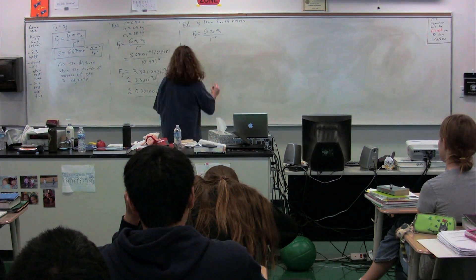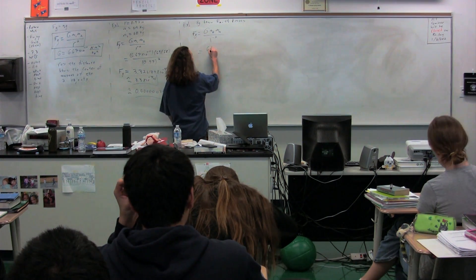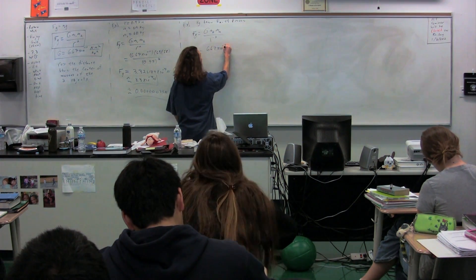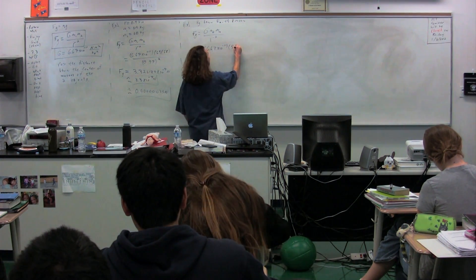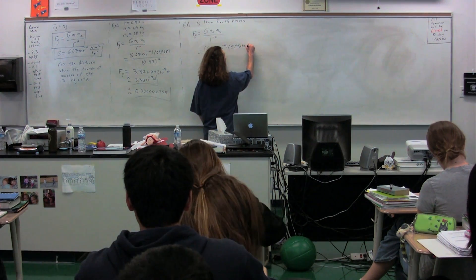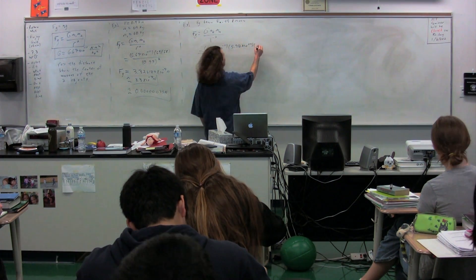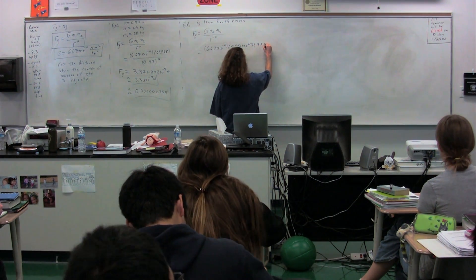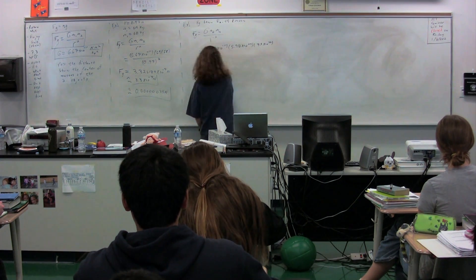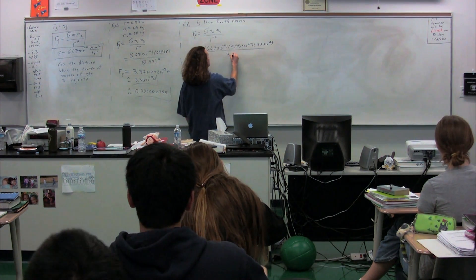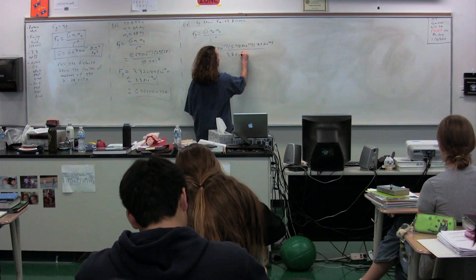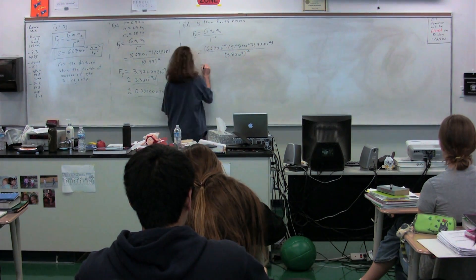Okay. We need all these numbers. Big G, 6.67 times 10 to the negative 11. The mass of the Earth, 5.98 times 10 to the 24th kilograms, times the mass of the Moon, which I believe is 7.4 times 10 to the 22nd kilograms. I'll look that up in just a moment. And the distance between the Earth and the Moon, which is 3.8 times 10 to the 8th meters, and we're going to square that.